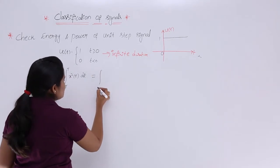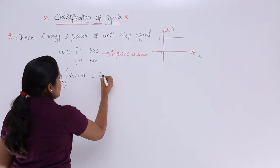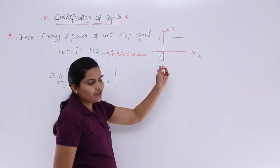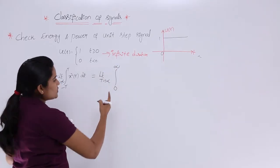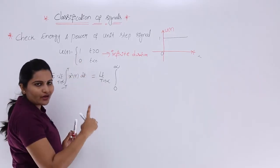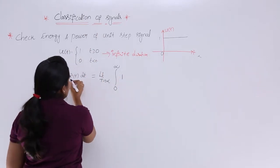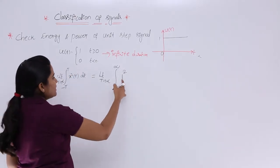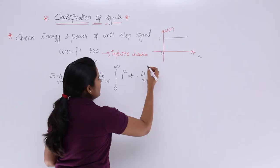Now substituting the values: limit as T → ∞, integral from −T to T. Since the signal starts from 0 and goes to infinity, the limits become 0 to ∞. The signal value x(t) = 1 from 0 to infinity, so squaring it gives 1² = 1. The integral becomes limit T → ∞ of the integral from 0 to ∞ of 1² dt.